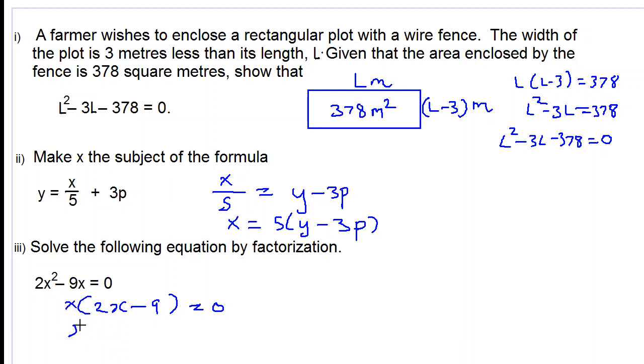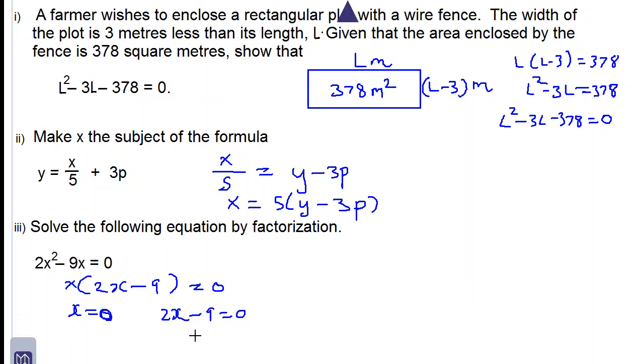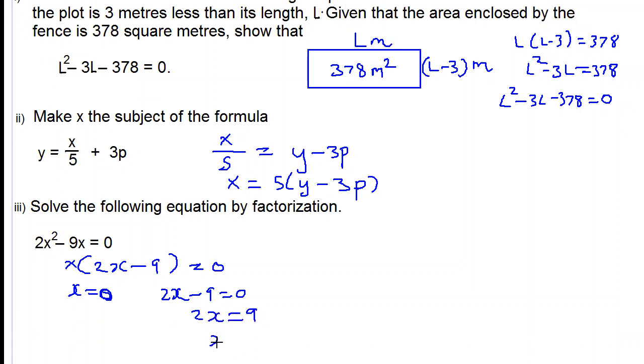Two cases exist. Case 1, X is equal to 0. And case 2 is when 2X minus 9 is equal to 0. Adding 9 to both sides we have 2X is equal to 9. And dividing both sides by 2 we have X is equal to 9 over 2. So these are our solutions.